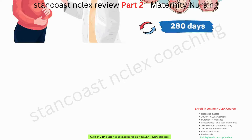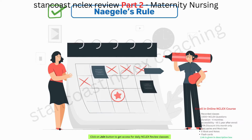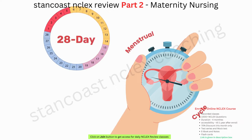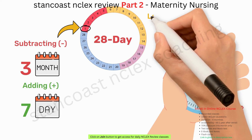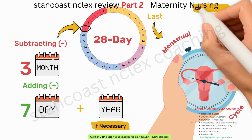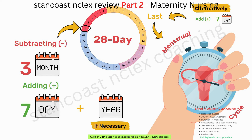One method employed to estimate the due date is Nagel's rule. To apply this rule, a woman should have a regular 28-day menstrual cycle. Nagel's rule involves subtracting three months and adding seven days to the first day of the last menstrual period, with an additional year added if necessary. Alternatively, one can add seven days to the last menstrual period and count forward nine months.